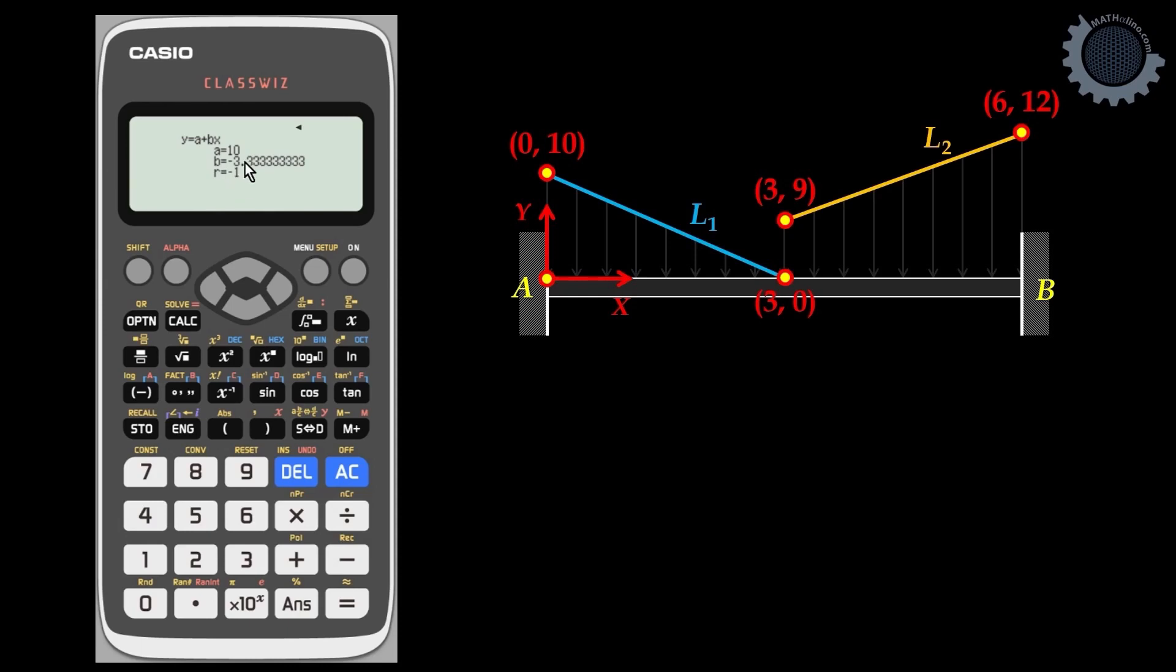We have this equation of line 1: Y is equal to 10 minus 3.33 repeating decimal. Y1 is equal to 10. But it is better to express that negative 3.33 into fraction.